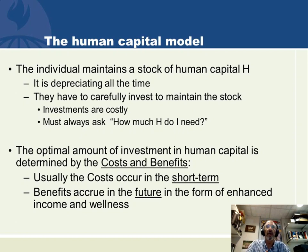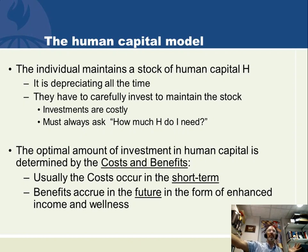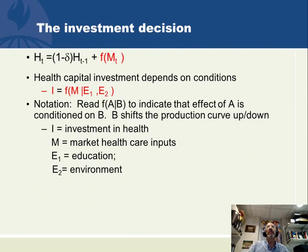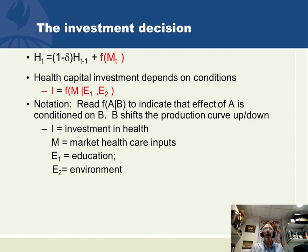Any good economic agent solves the model by doing cost-benefit analysis: what is the marginal cost of a new unit of my body's health, and what is the marginal benefit over my life course? The benefits accrue in the future — I can get both money and utility from this health. The health capital stock model states that health capital at time t equals health capital at t minus 1 times 1 minus depreciation, plus new investment. My investment depends upon medical care and shifting features — education shifts the productivity of a unit of medical care up and down.